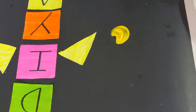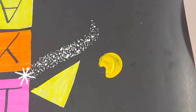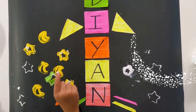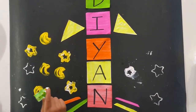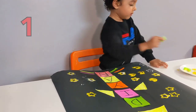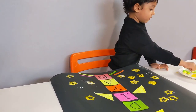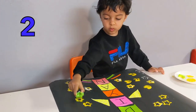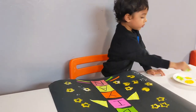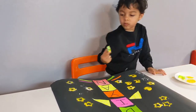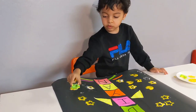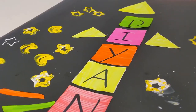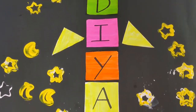Hello pretty moon! Moon. One. Three. What is this Deyan? Rocket!